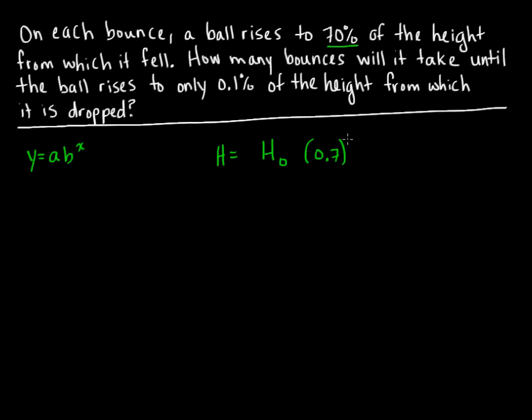Our exponent x is going to represent the number of bounces for the ball. So we've got x representing number of bounces. H represents the height after that particular number of bounces. So we've got an equation.